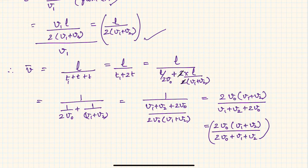you will get this final relationship. Hence you will get finally, if you substitute all these t1 and t into this relationship, you will get mean velocity as 2v0(v1 + v2) divided by (2v0 + v1 + v2).